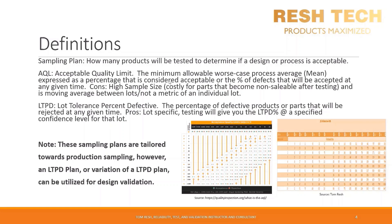AQL is also a movement average between lots, which means you will not know the exact performance of an individual lot using an AQL Sampling Plan.